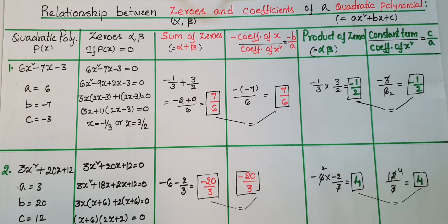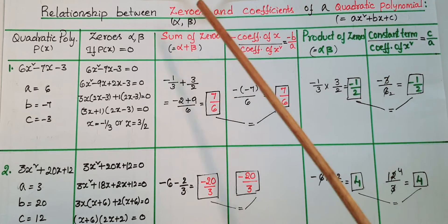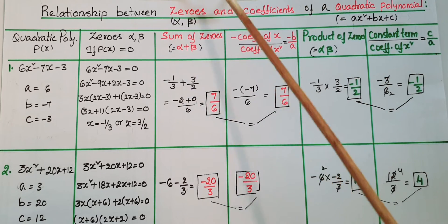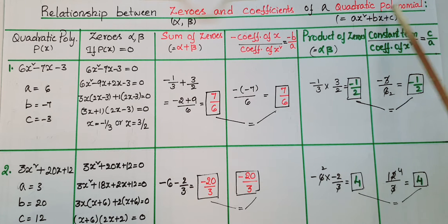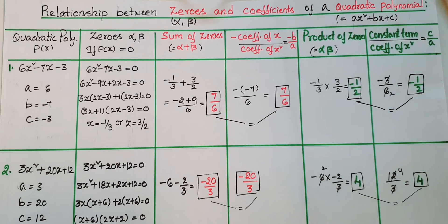Hello everyone. Today I am going to explain the relationship between zeros and coefficients of a quadratic polynomial, and the solution of problems from Exercise 2.2 from NCERT. Let the zeros of the quadratic polynomial be alpha and beta. We know that a quadratic polynomial is in the form of ax² + bx + c.